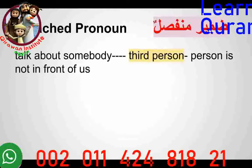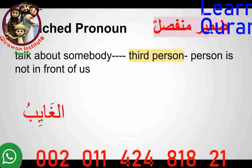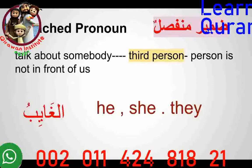So when do we use pronouns? We use pronouns when we are talking about a third person — when we are talking in front of somebody and using someone else's name. This is called Al-Ghaib, when the person is not in front of you. In English we use he, she — we say 'he is good,' 'she came yesterday,' 'they are going somewhere.' We are talking to someone, but the person we are talking about is not in front of you. That's called Al-Ghaib.